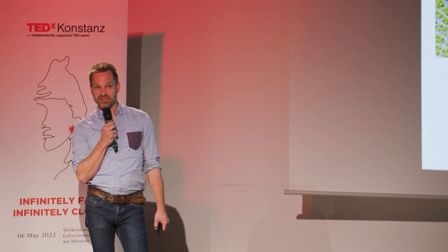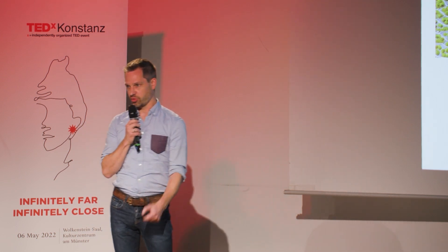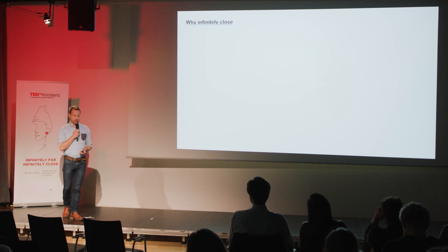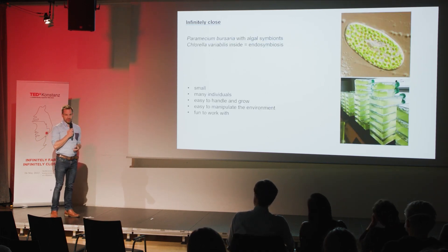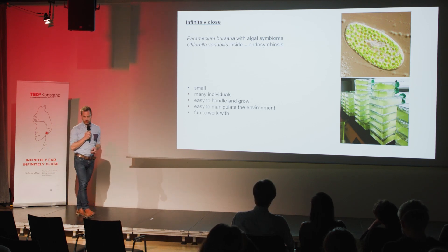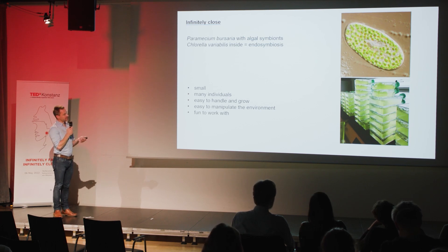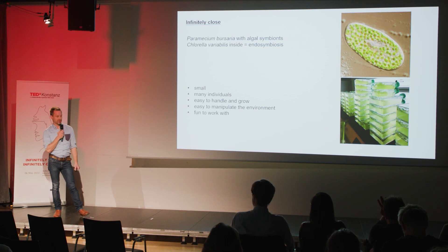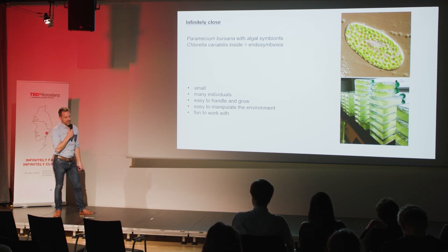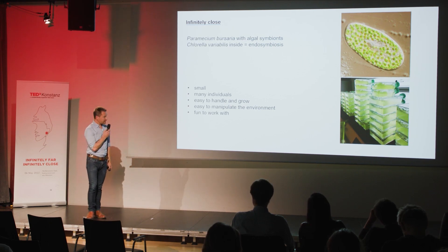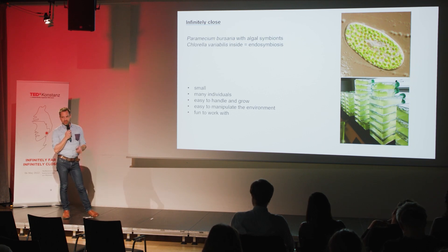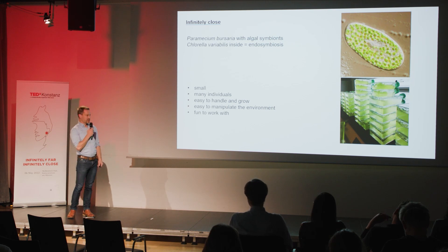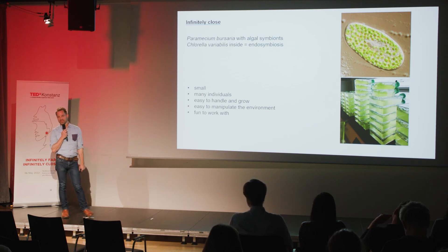I will tell you a bit about how we study symbiosis — basically asking: why do organisms live infinitely close? We don't study corals or trees, but use the ciliate Paramecium bursaria with its algal symbionts. They're extremely small, so we can put them in containers in the laboratory with many individuals. We can grow them easily under simple conditions, change the environment, and manipulate it to see how this affects the symbiosis — all without flying around the globe.